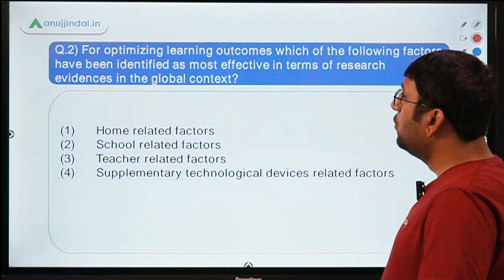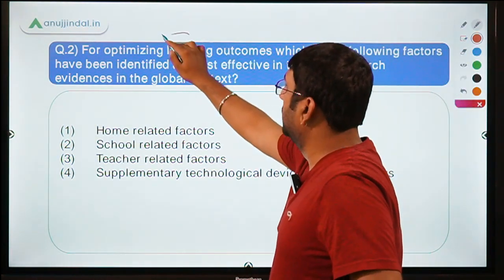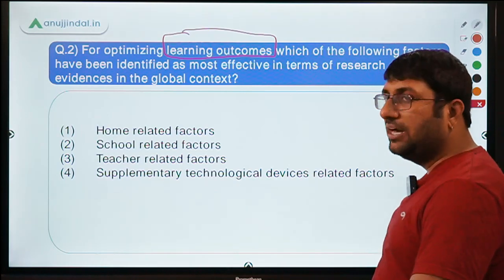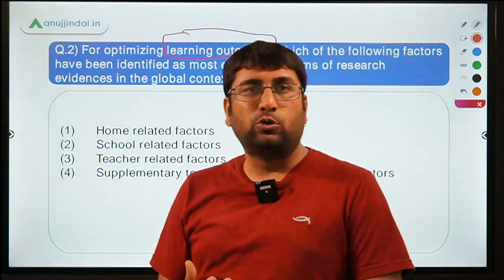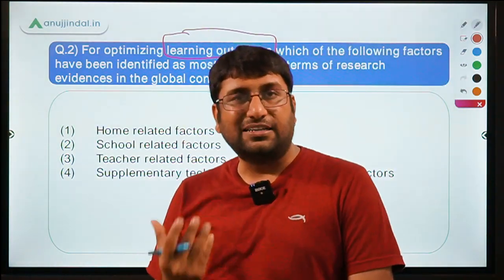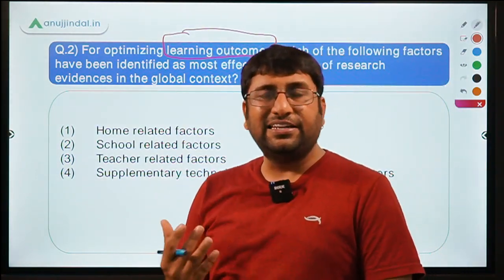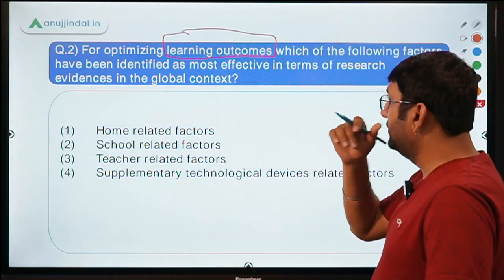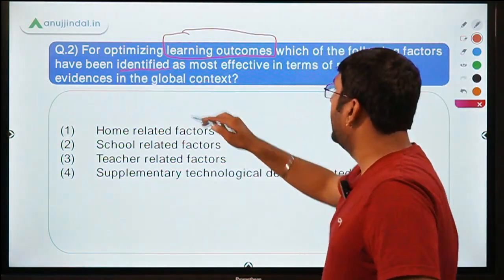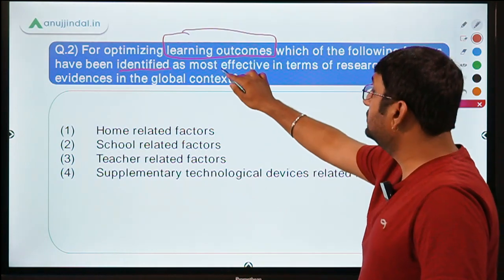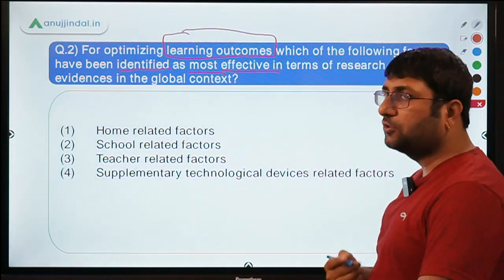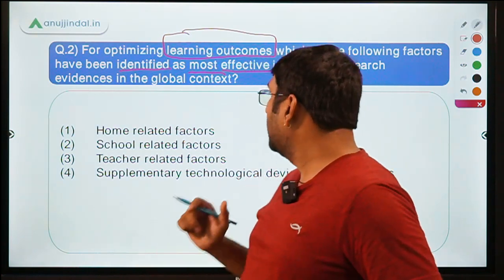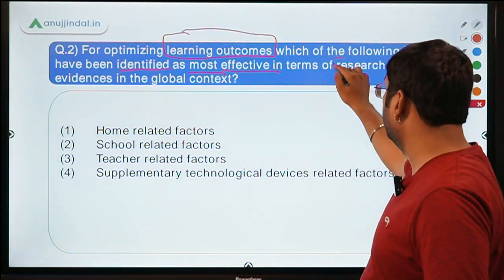Another important question: for optimizing learning outcomes, which of the following factors have been identified as most effective? Please read the question carefully — it is talking about learning outcomes. The question asks us to identify the most effective factor, based on research evidence, in a global context.